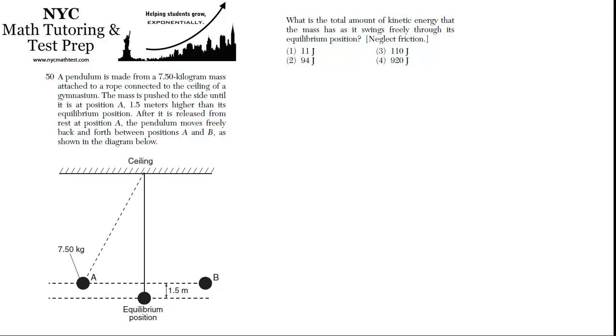Number 50: a pendulum is made from a 7.5 kg mass attached to a rope connected to the ceiling of a gymnasium.